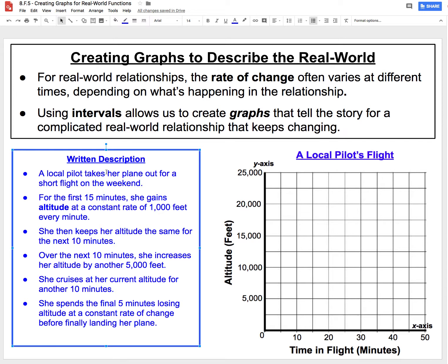We're told that a local pilot takes her plane out for a short flight on the weekend. For the first 15 minutes, she gains altitude at a constant rate of 1,000 feet every minute. So if I want to describe this situation on a graph, for the first 15 minutes, we're going to limit our domain from 0 minutes up to 15 minutes.